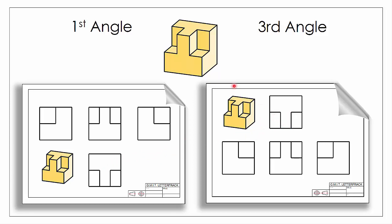The same thing applies when it comes to our end views as well. If I want to look in from the right hand side of the object, it appears on the left hand side of my front elevation in first angle, whereas in third angle it appears on the right hand side. And the same thing applies looking in from the left — it will appear on the right hand side of my front elevation in first angle, whereas it will appear on the left hand side in third angle.